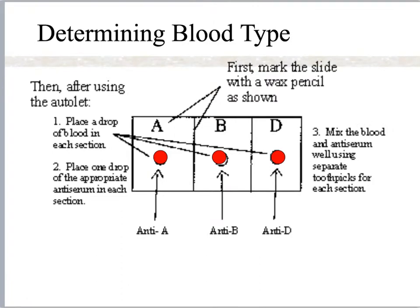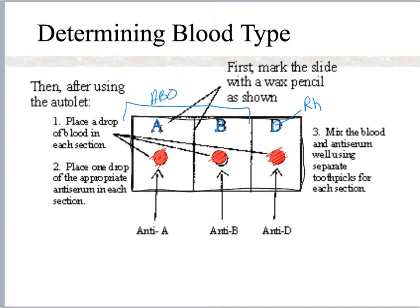When it comes to blood typing, you are drawing blood, and here I am demonstrating a slide where we have put three little drops of blood on it — right here, right here, and right here. We've labeled them A, B, and D. D goes with RH, and A and B go with the ABO blood type.